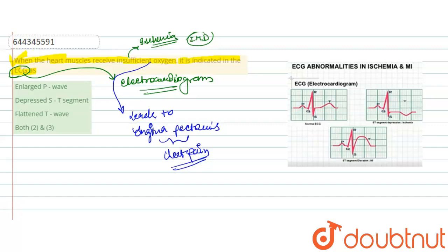When insufficient oxygen is present or received in our heart muscles, chest pain is caused. This particular condition is technically known as angina pectoris. If we see the ECG at this particular condition, here is an image.